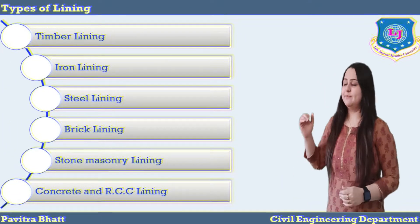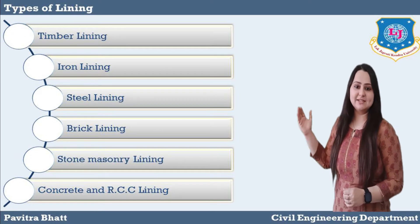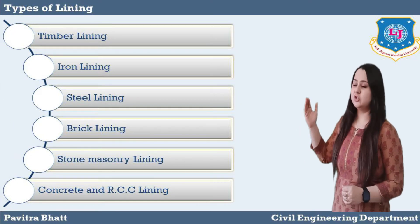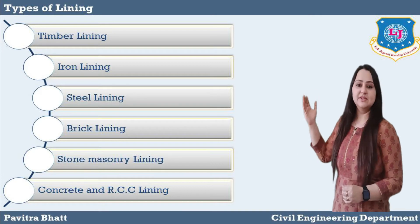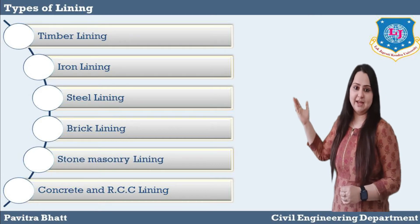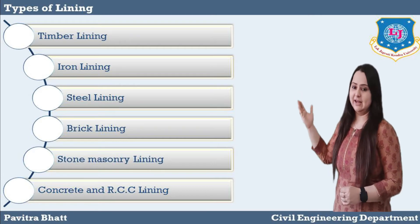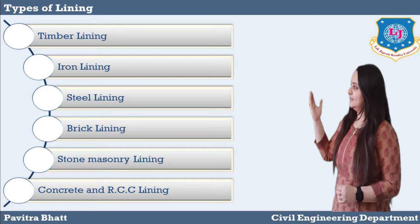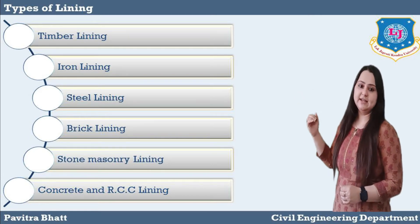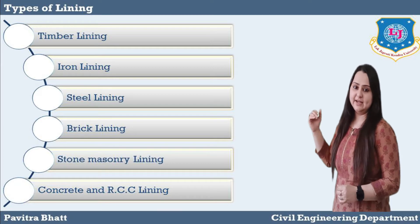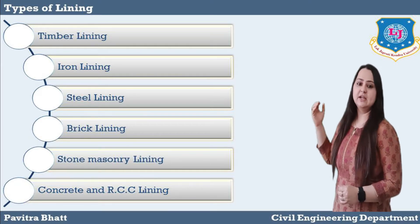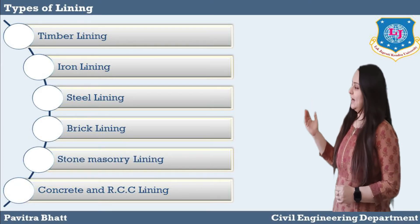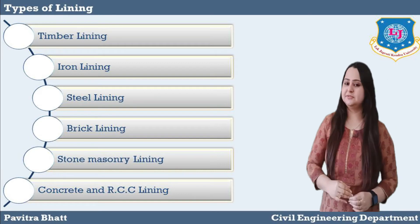The next topic is Types of Lining. Various types of lining are shown in this chart. First, Timber lining; second, Iron lining; third, Steel lining; fourth, Brick lining; fifth, Stone masonry lining; and last, Concrete and RCC lining.